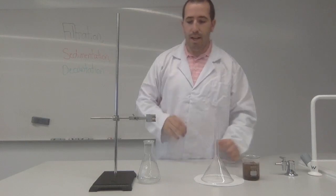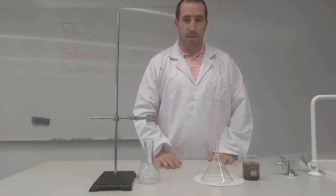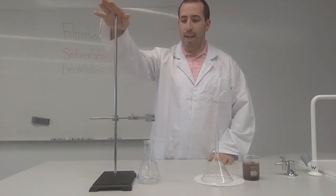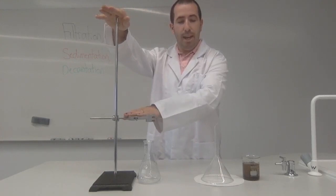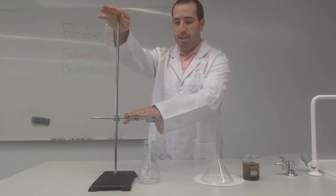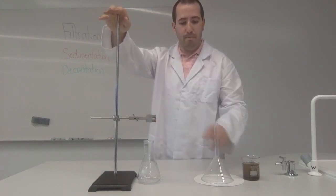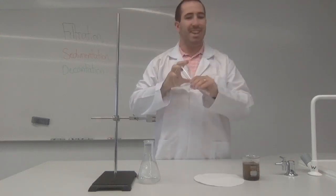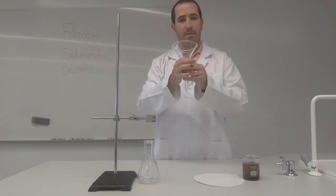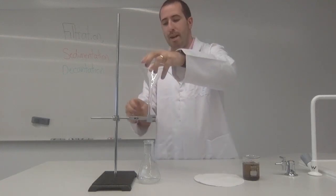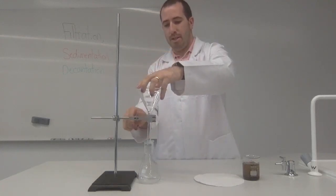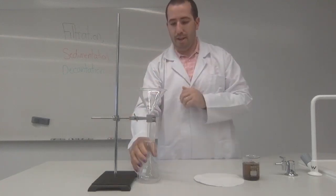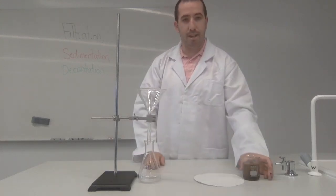So let's set some things up first. So what we've got here is our retort stand clamp and boss head. Now to do this, we usually use a ring clamp because obviously with our funnel, we've got a ring clamp to attach to, but here we just use a nice little clamp that goes into the beaker as such.